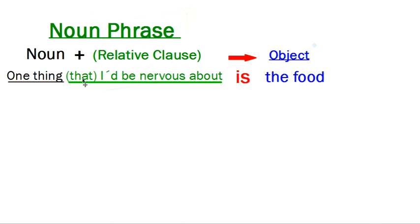Now, I can use that or I can decide not to. So this is optional. But in order to make this a full sentence, I need to tell you what. One thing I'd be nervous about is the food. And in this context, the food is the object of the sentence. It's telling me what. What are you nervous about?